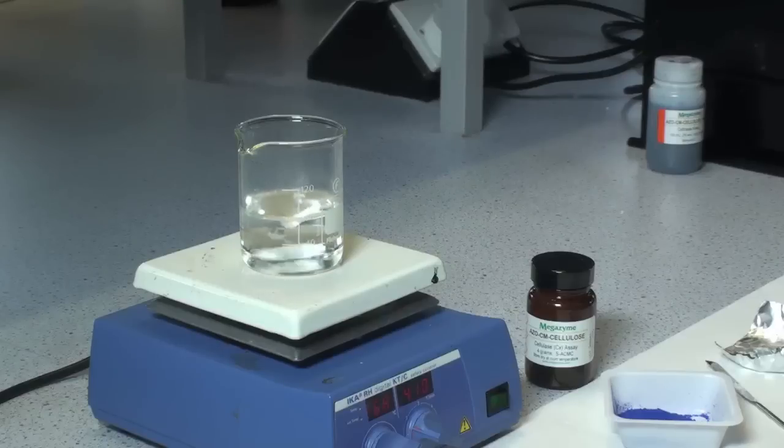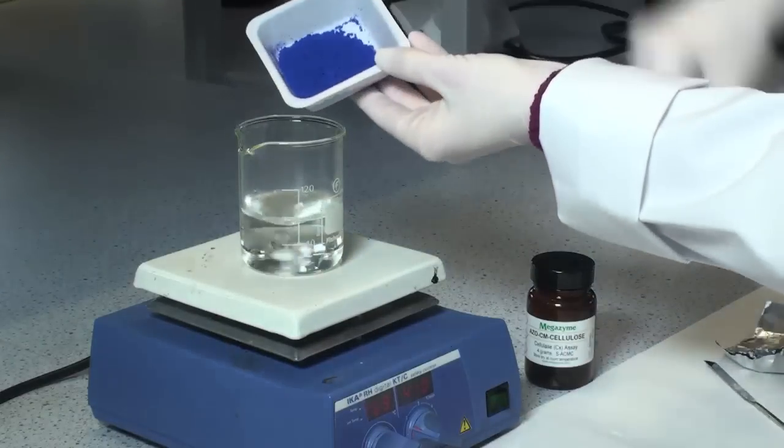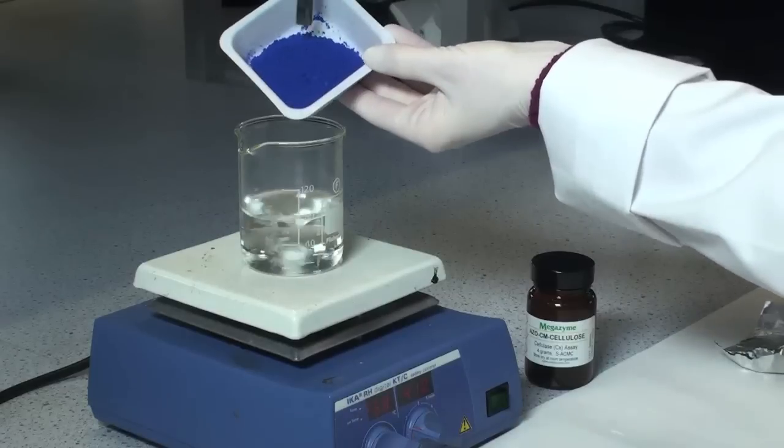Add 2 grams of powdered azo-CM cellulose to 80 ml of boiling and vigorously stirring water on a hot plate magnetic stirrer.